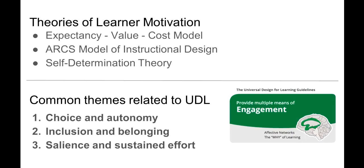There's been quite a lot of research done on learner motivation. Some current theories include the expectancy value cost model, the ARCS model, and self-determination theory. The important thing to know is that there are a lot of themes in these theories that relate to universal design for learning. The themes and strategies highlighted in this video will include the importance of learner choice and autonomy, the importance of inclusion and belonging, and the importance of salience and sustained effort.